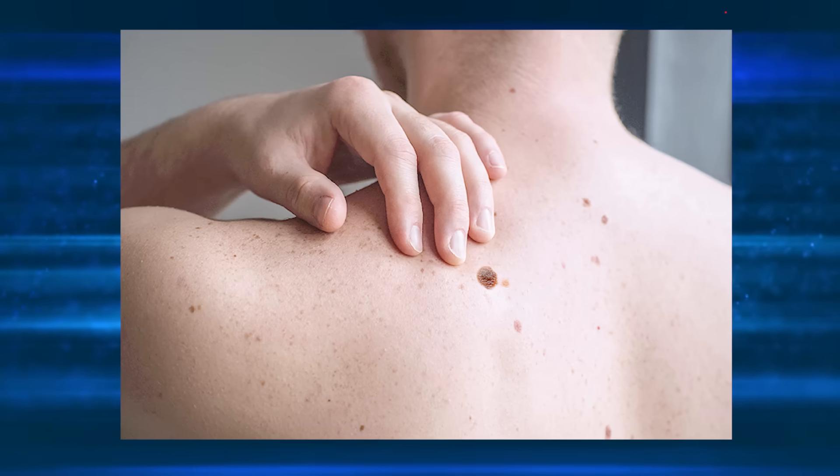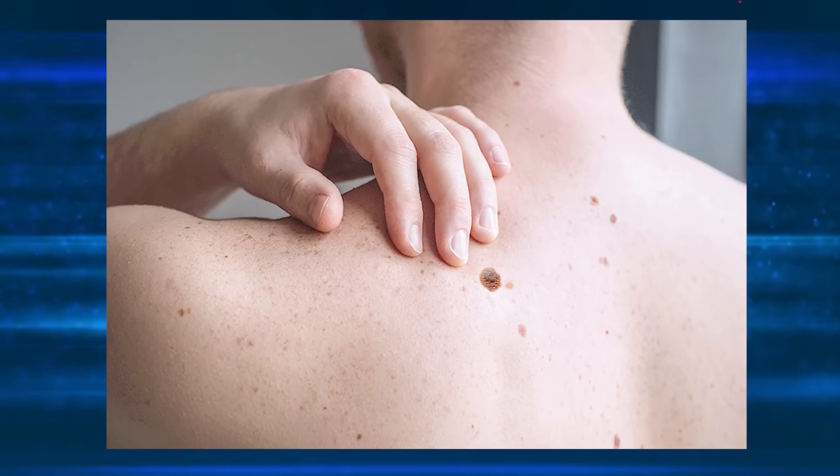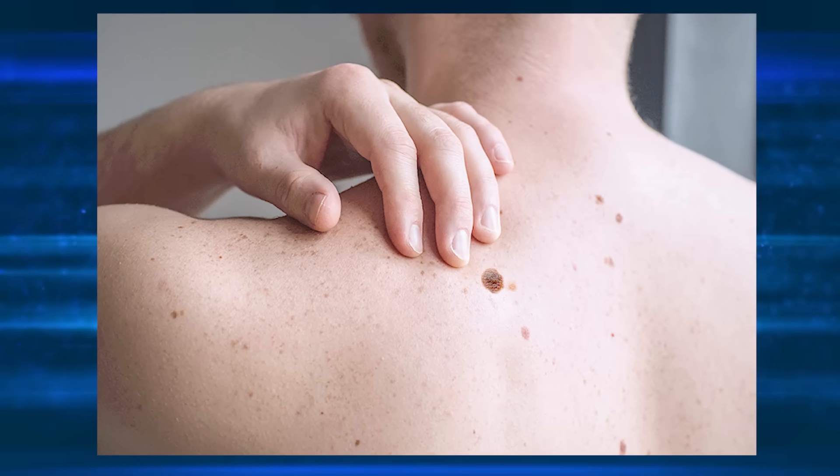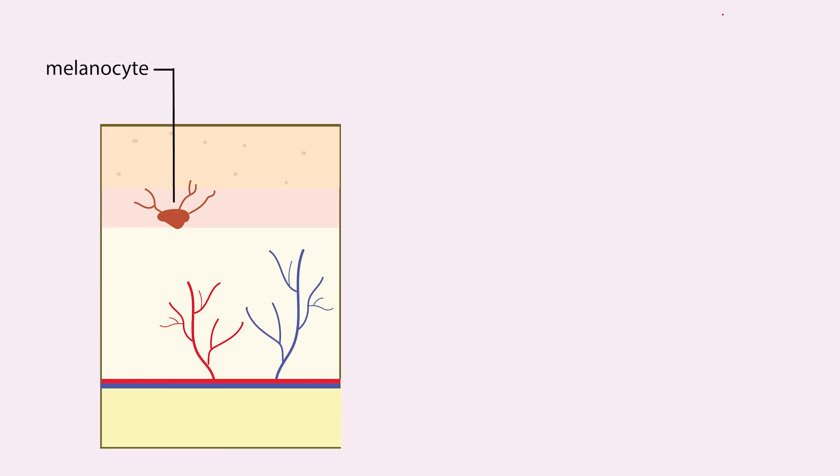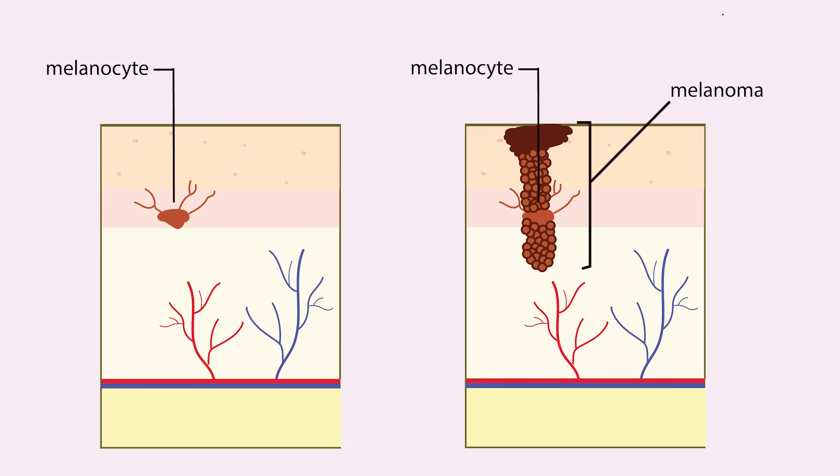Since your skin is directly exposed to sunlight, the most common type of cancer you get from UV light is melanoma. Melanocytes are the cells in your skin that produce melanin, giving it its color. When melanocytes become cancerous, it's called melanoma.